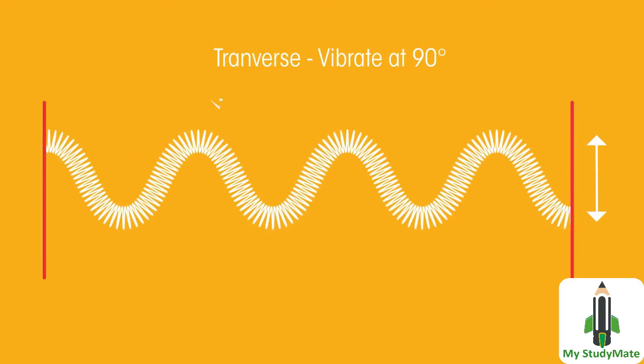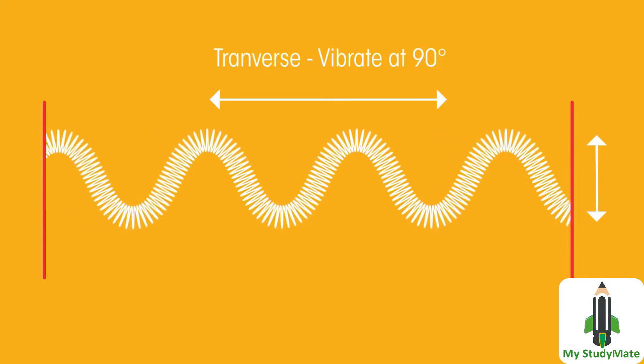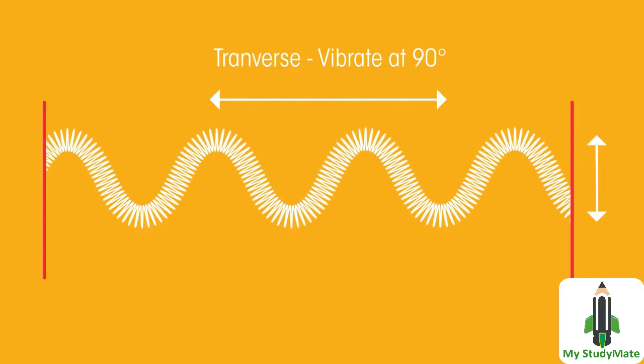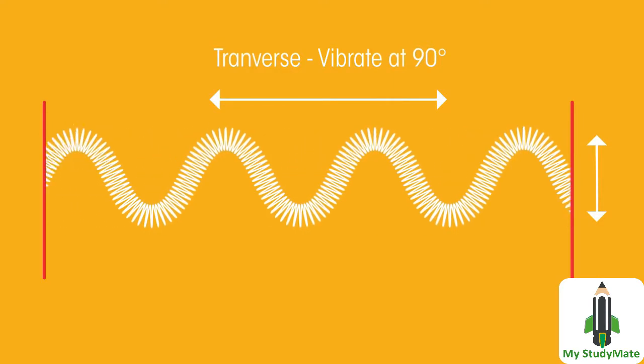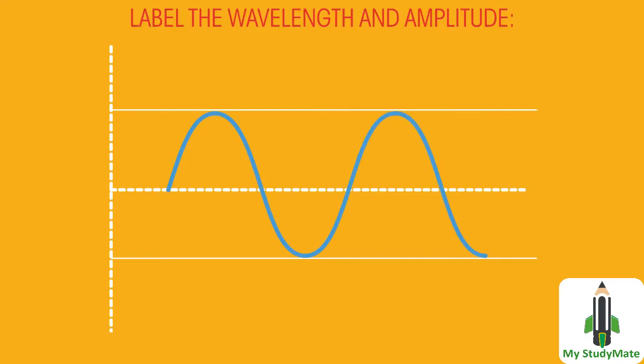Whereas in transverse wave, the hand moves up and down, but the wave energy still moves horizontally. Again, the ends of this slinky never leave the hands holding it. It's just the energy that moves along.